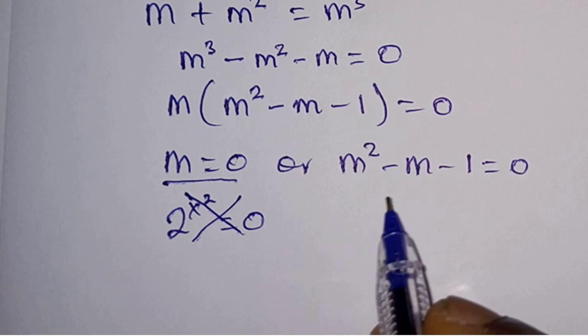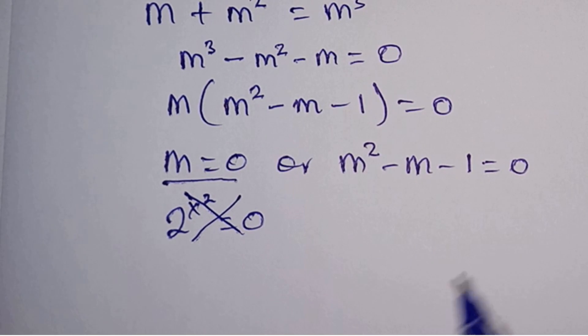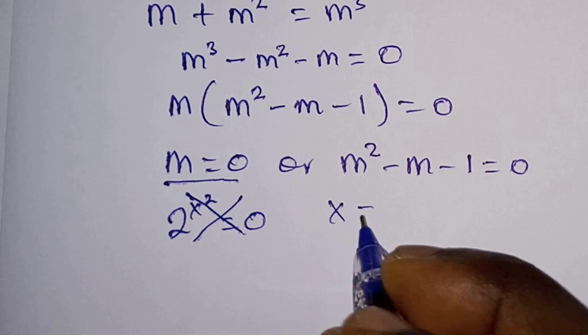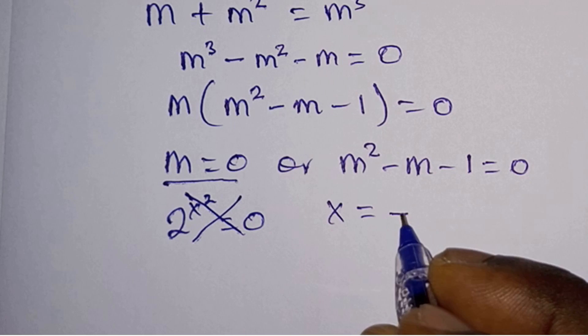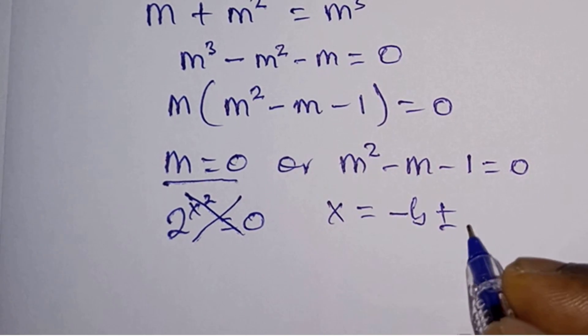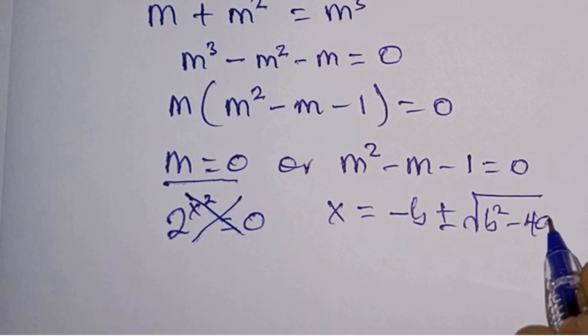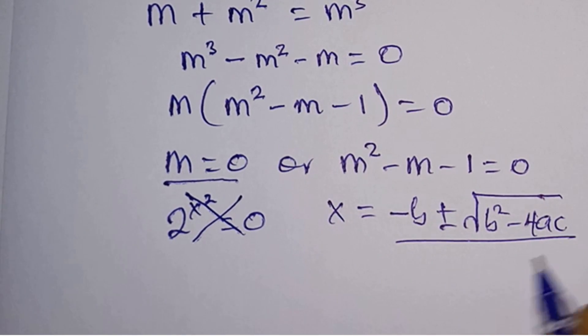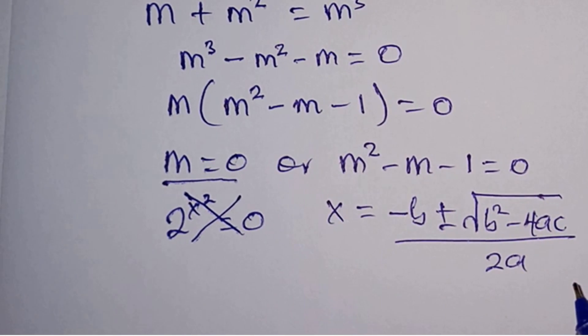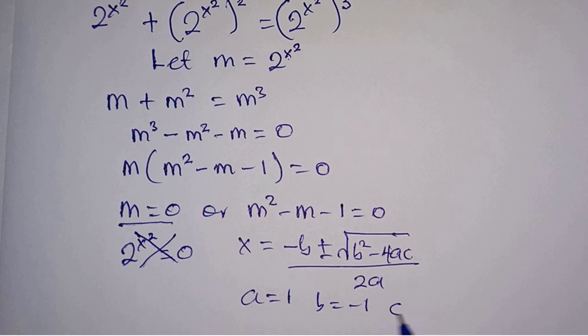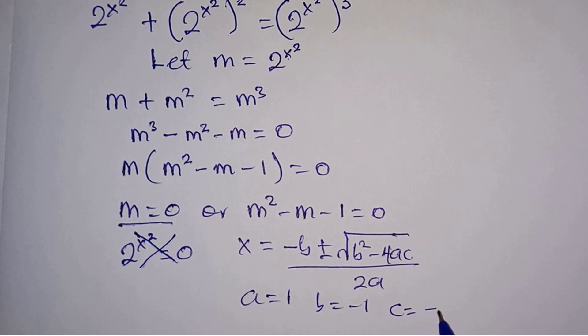Now let's pay attention to this quadratic equation. Let's go ahead and use the quadratic formula which is x = (-b ± √(b² - 4ac)) / 2a. We have a = 1, b = -1, and c = -1 as well.